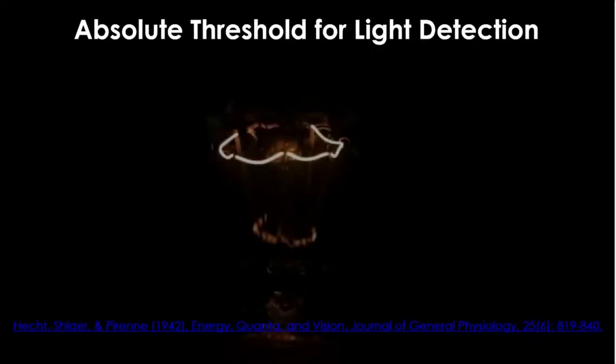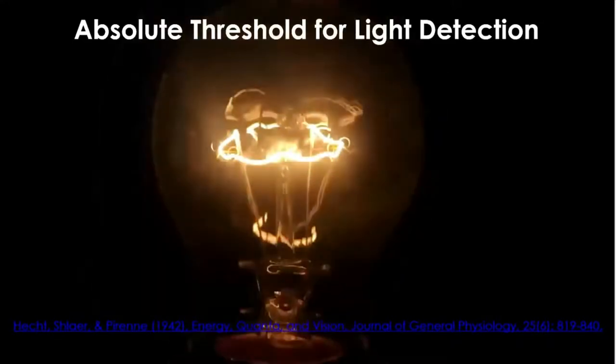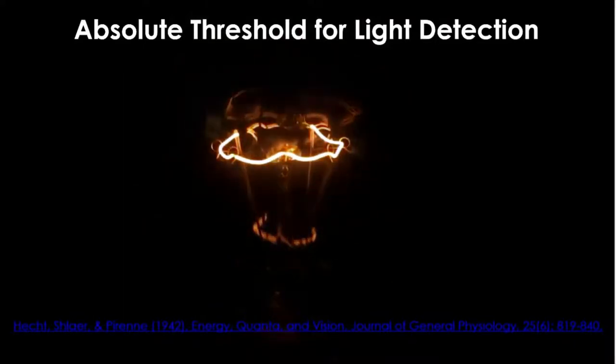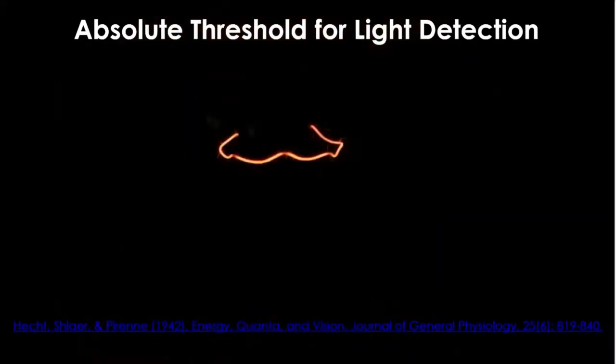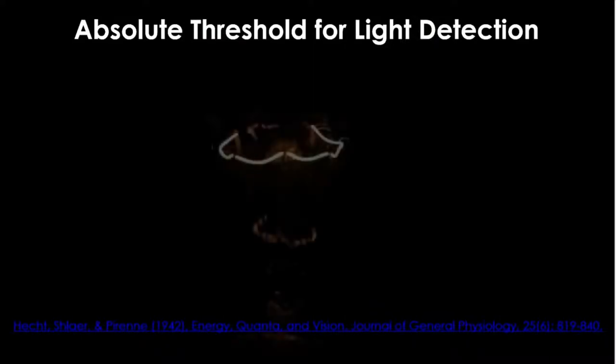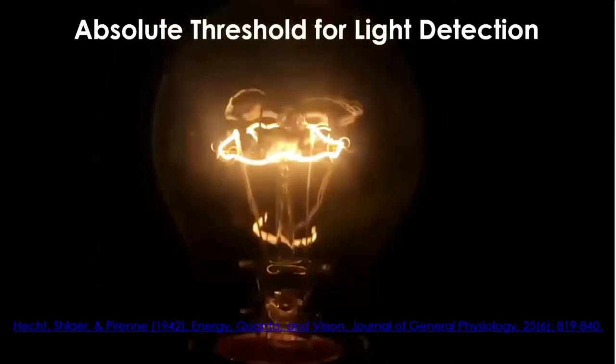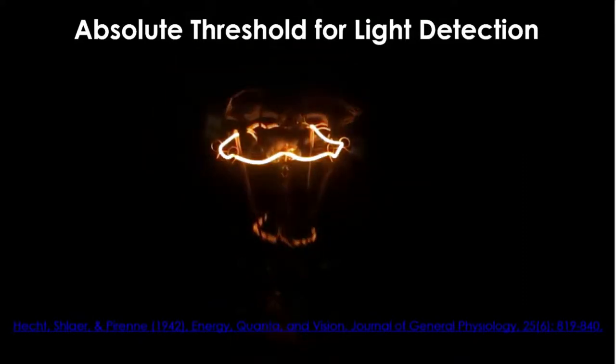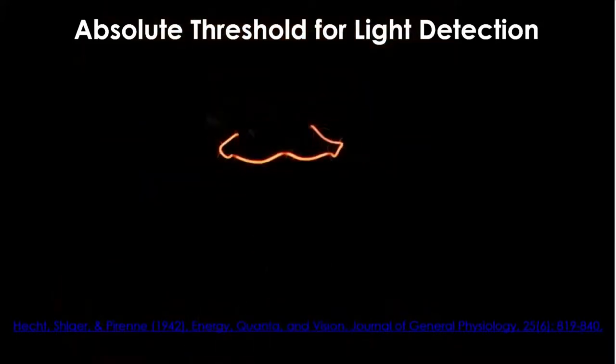Measuring an absolute threshold for human light detection is a long-standing question in psychophysics, so it has been tested many times. Among the attempts, a seminal study by Hecht, Schlaer, and Pirenne in 1942 retested the question by improving the experimental conditions of past attempts with a stronger statistical analysis. Since its publication, this paper is still considered one of the classical experiments setting a very high standard in testing vision.